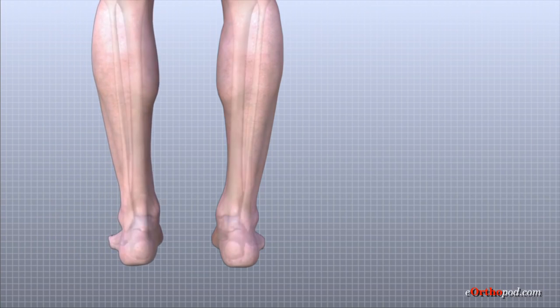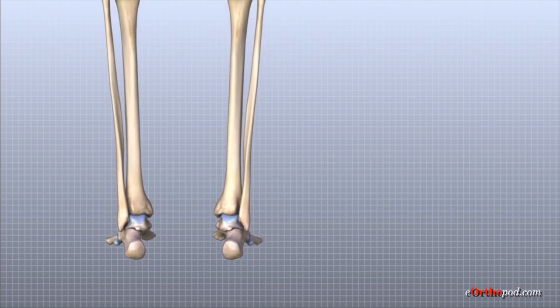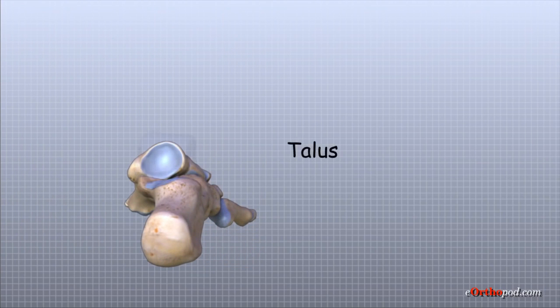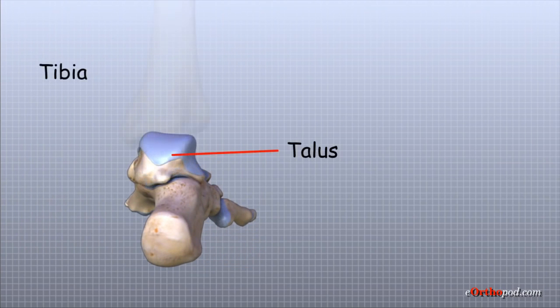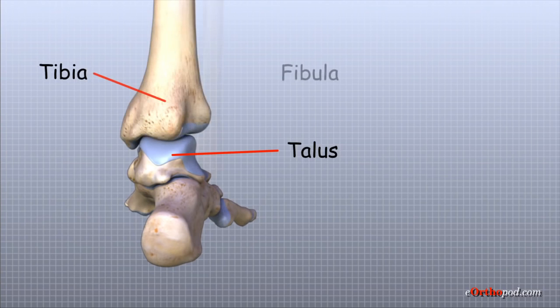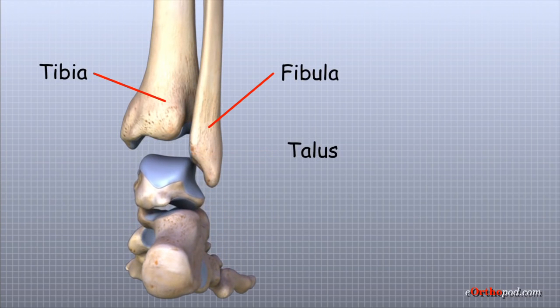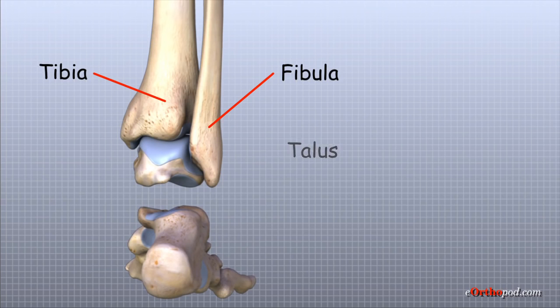The ankle joint is formed by the connection of three bones: the talus, the tibia, and the fibula. The top of the talus fits inside a socket that is formed by the lower ends of the tibia and the fibula.